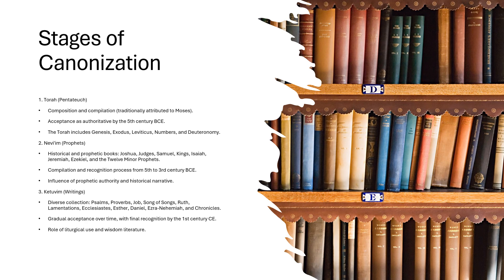The Torah includes Genesis, Exodus, Leviticus, Numbers, and Deuteronomy. Then you have the Nevi'im, or the Prophets — the historical and prophetic books: Joshua, Judges, 1 and 2 Samuel, 1 and 2 Kings, Isaiah, Jeremiah, Ezekiel, and the 12 minor prophets. This is compiled and recognized through a process beginning in the 5th century and moving toward the 3rd century BCE, which makes sense as some minor prophets like Malachi were written in the 4th or 3rd century BCE.